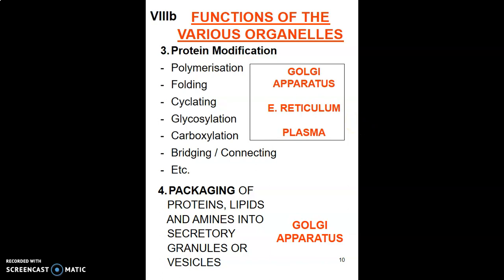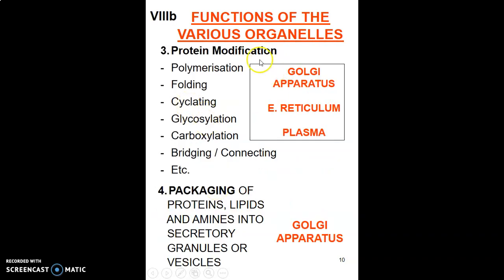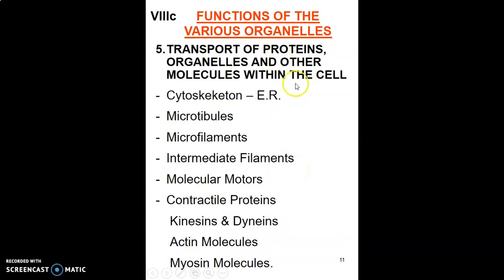The changes a protein undergoes occur mainly in the Golgi apparatus and partially in the endoplasmic reticulum. After modification, proteins are packaged — mainly by the Golgi apparatus — into vesicles. To summarize: protein formation begins with transcription in the nucleus, goes to the ribosome for translation and protein synthesis, and proteins are then modified and packaged into vesicles by the Golgi apparatus.